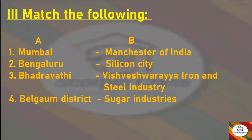Now we will move to the next section: Match the Following. We have two columns, Column A and Column B. The answers are: Mumbai — Manchester of India; Bengaluru — Silicon City; Bhadravati — Visvesvaraya Iron and Steel Industry; Belgaum District — Sugar Industries. These are the correct matches.